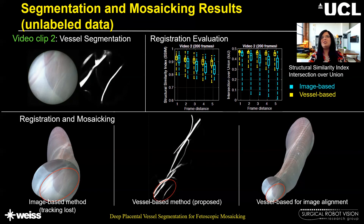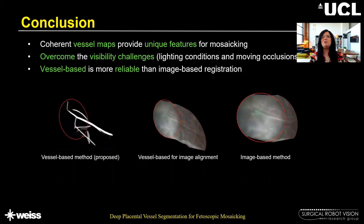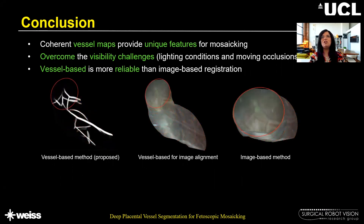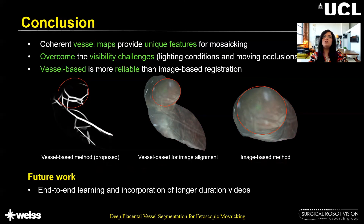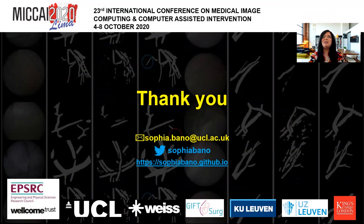For the qualitative and quantitative evaluation of the remaining four clips, I recommend checking out our paper and the associated supplementary material. To conclude, we have shown that coherent vessel maps provide unique features for field of view expansion in fetoscopy. Vessel segmentation helps overcome some of the visibility challenges including changing light conditions and moving occlusion, which is why vessel-based methods tend to give much more reliable results compared to image-based methods. As for future work, we plan to extend this into an end-to-end framework for segmentation and registration, and to incorporate videos of much longer duration for creating the mosaic.